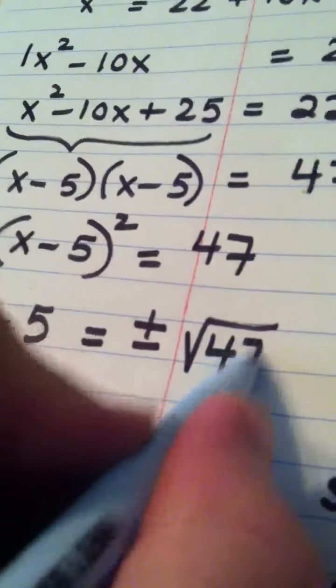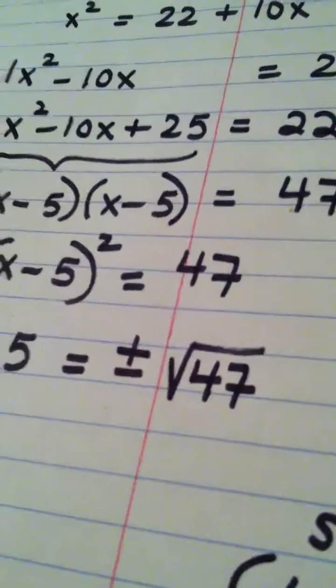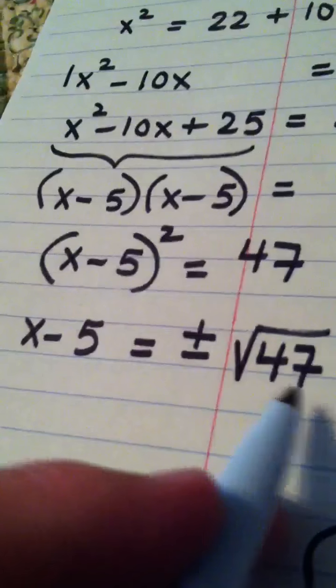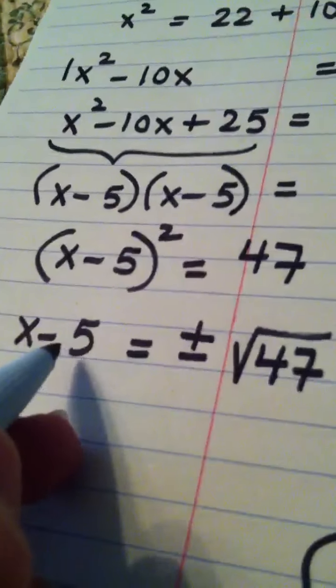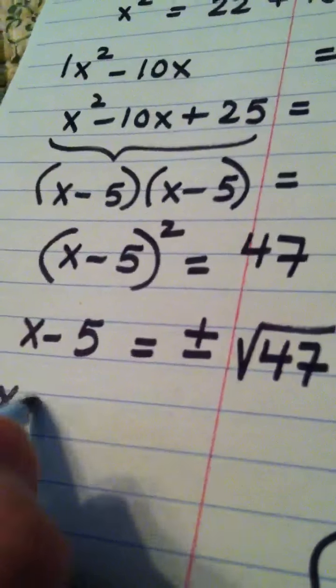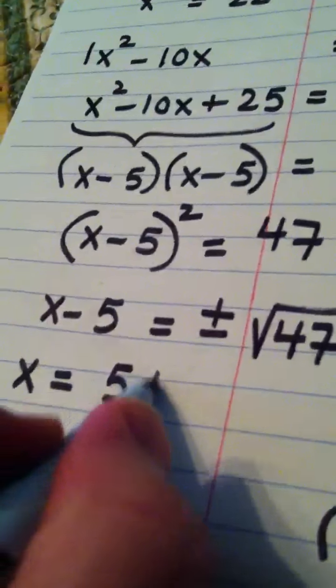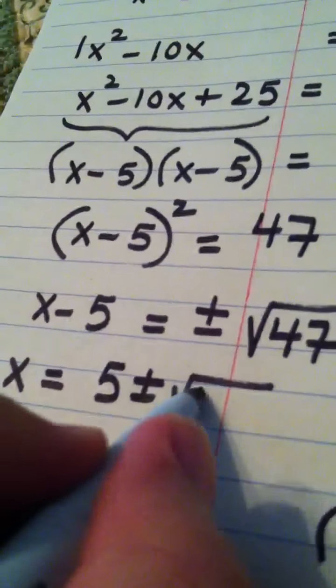And what we need to do now is to get x alone. We're going to accomplish that by adding five. x equals 5 plus or minus the square root of 47.